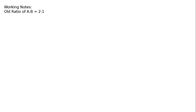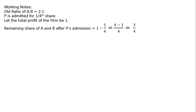Working notes: Old ratio of A to B is equal to 2 to 1. C is admitted for one-fourth share. Let the total profit of the firm be 1. Remaining share of A and B after C's admission is 1 minus one-fourth, which using LCM 4 gives 4 minus 1 equal to 3 upon 4.